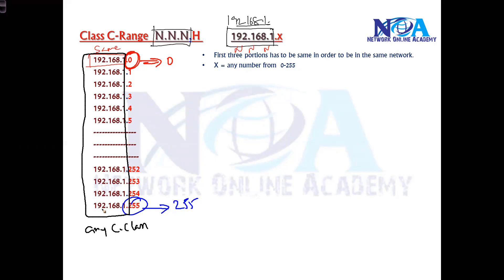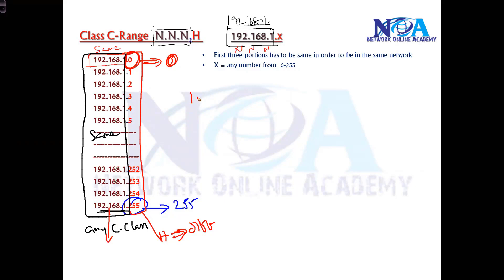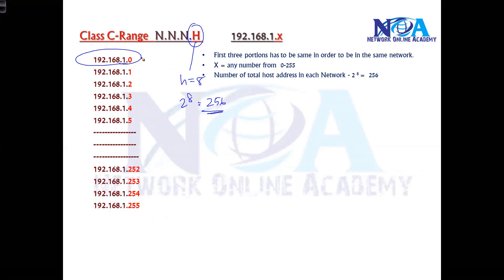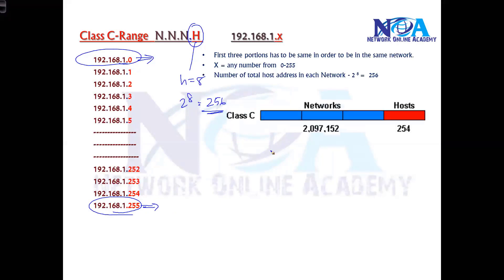For any C class address, the first three portions must not change — that is the network portion. The last portion is the host portion, and every host must have a different address. The network portion stays the same; the host portion must be different for each device. In one C class network, you get a total of 256 addresses, calculated as 2 to the power of 8, ranging from 192.168.1.0 to 192.168.1.255.